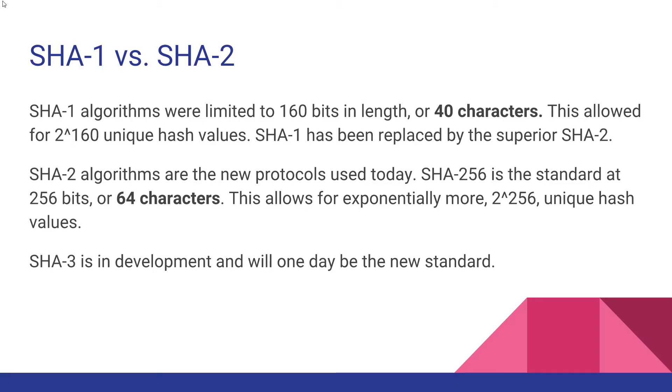Here's a little bonus fact: what is the difference between SHA-1 and SHA-2? The only difference is that SHA-2 are the newer, more robust algorithms, whereas SHA-1 are the older, less often used algorithms from the last generation. All that means is that there are more possible combinations of bits or hash values in SHA-2 algorithms than in SHA-1. SHA-1 was actually limited to 160 bits, whereas today we looked at SHA-256. So there are exponentially more unique hash values possible for SHA-2 algorithms than there were for SHA-1.